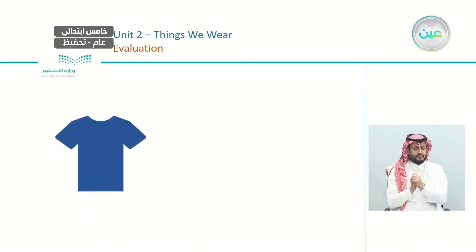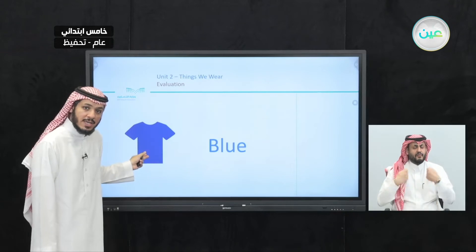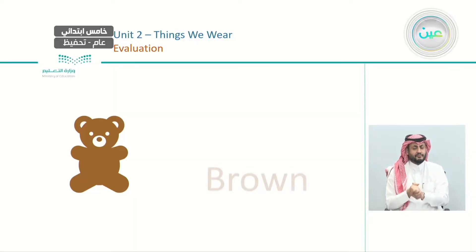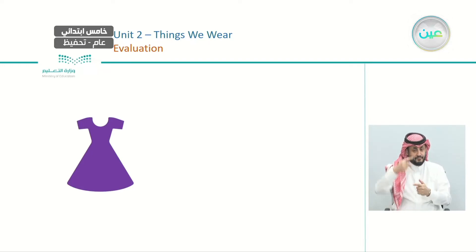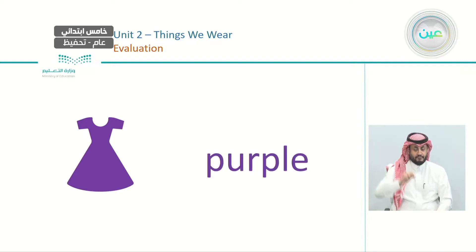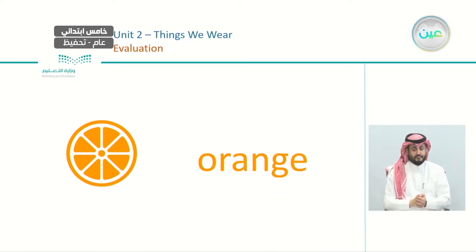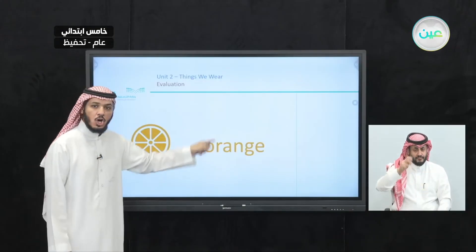Can you tell me which color this is? This is blue — a blue t-shirt. After that, we have a bear — the color is brown. Then a dress — starting with P — it's purple. After that, this fruit: orange. The color is also orange. And a duck — it's yellow.